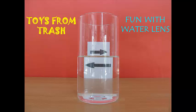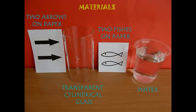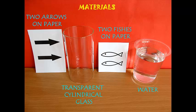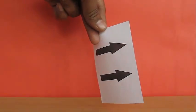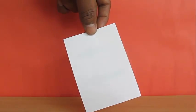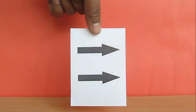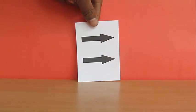You can make this amazing lens at home with just a glass of water, and you can magically change the direction of the arrows or flip the image. All you need is just a glass. Take this piece of paper which has two arrows printed, which are both pointing in the same direction.